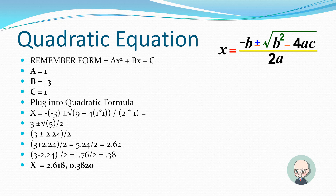Plugging in: x equals the negation of negative 3, plus or minus the square root of 9 minus 4 times 1 times 1, divided by 2 times 1. We got 9 from negative 3 squared. This simplifies to 3 plus or minus the square root of 5, divided by 2, which is 3 plus or minus 2.24 divided by 2. Addition: 5.24 divided by 2 equals 2.62. Subtraction: 0.76 divided by 2 equals 0.38.